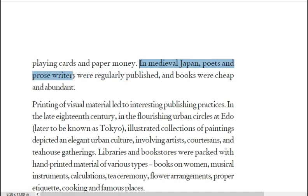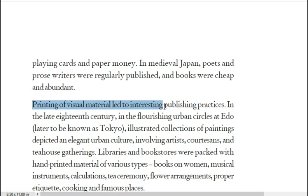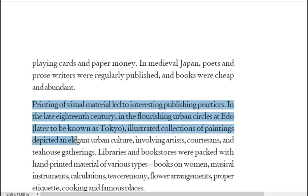In medieval Japan, poets and prose writers were regularly published and books were cheap and abundant. Printing of visual material led to interesting publishing practices in the late 18th century in the flourishing urban centers at Edo — later known as Tokyo. Illustrated collections of paintings depicted an elegant urban culture involving artists, quotations, and tea house gatherings.